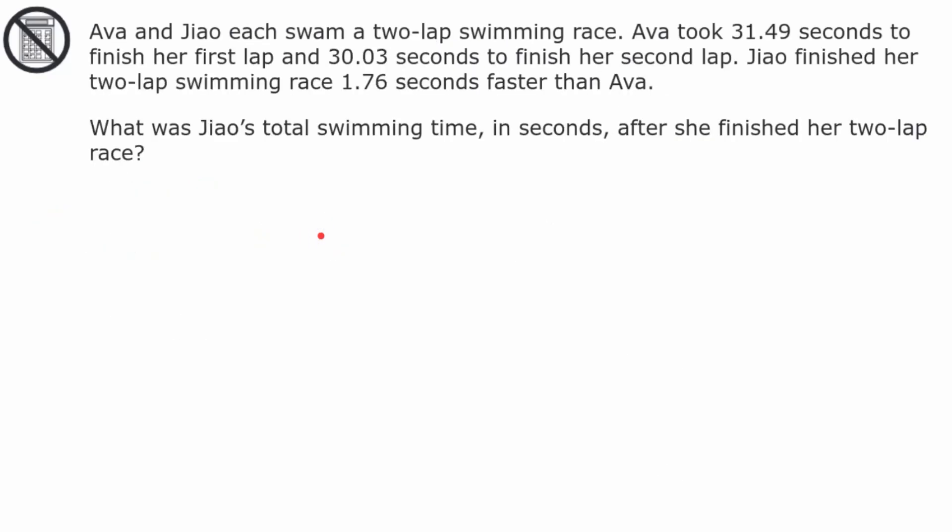Ava and Zhao each swam a two-lap swimming race. Ava took 31.49 seconds to finish her first lap and 30.03 seconds to finish her second lap. Zhao finished her two-lap swimming race 1.76 seconds faster than Ava. What was Zhao's total swimming time in seconds after she finished her two-lap race? Pause now and come back when you're ready. Welcome back. The first thing I know is that I have to calculate Ava's swim time. Her two laps were these values. When I add them together 9 plus 3 is 12, carry the 1, I get 4 plus 1 is 5, 1 plus 0 is 1, and 3 plus 3 is 6. So Ava's total swimming time was 61.52 seconds.